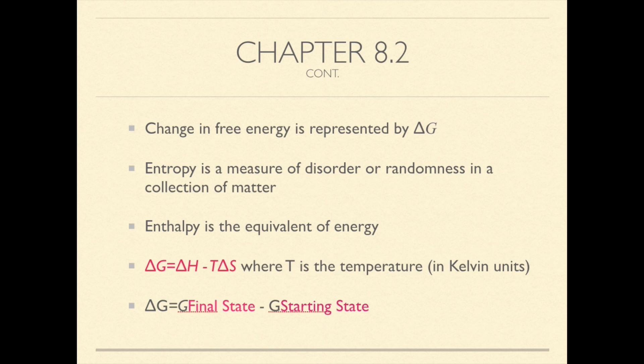To calculate the free energy change that occurs when a system changes, like during a chemical reaction, you can use the formula G equals H minus TS, where G is the change in free energy, H stands for the change in the system's enthalpy, T stands for the temperature in Kelvin units, and S represents entropy.